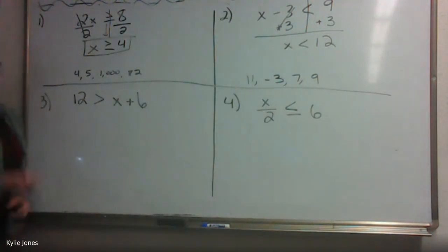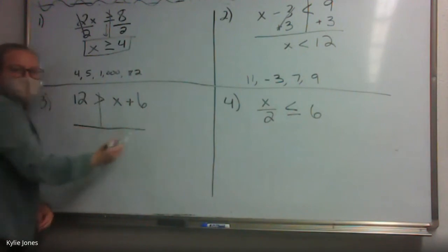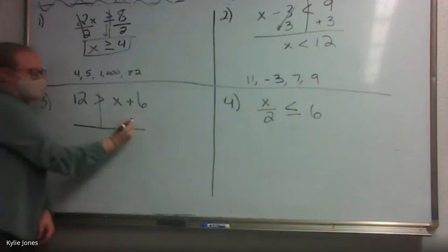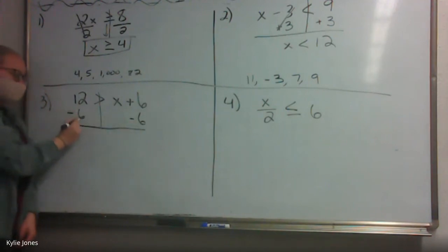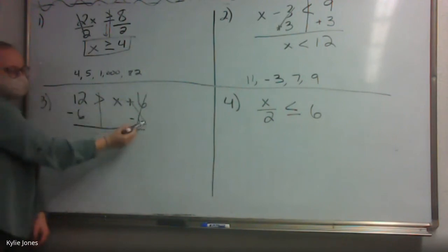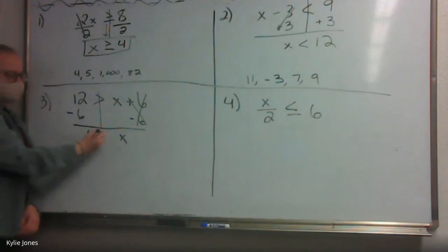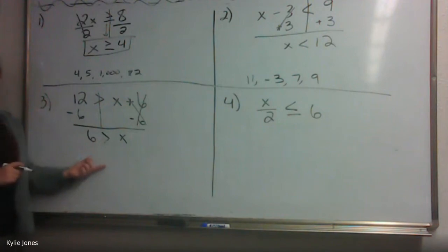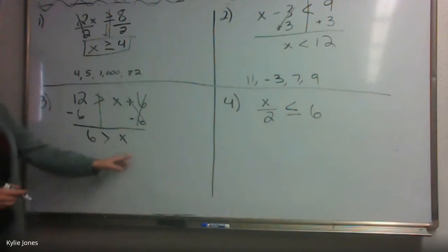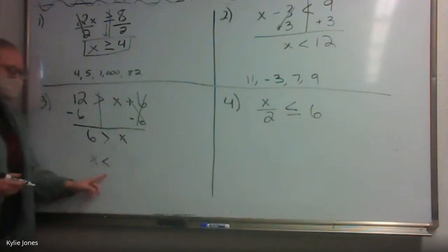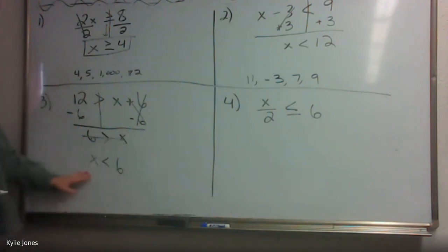Number 3: 12 is greater than x plus 6. Step one — draw the upside-down T to split your inequality. This is adding 6, so we need to subtract 6 on both sides. 6 minus 6 is 0 — those cancel. We have x on this side, and 12 minus 6 is 6. What goes in the middle? 6 is greater than x. But this is backwards — we don't usually see it like this. So we flip it: the arrow stays pointing toward x. It becomes x is less than 6.